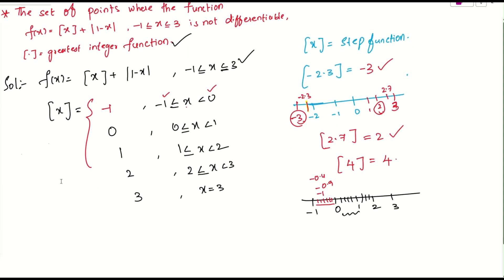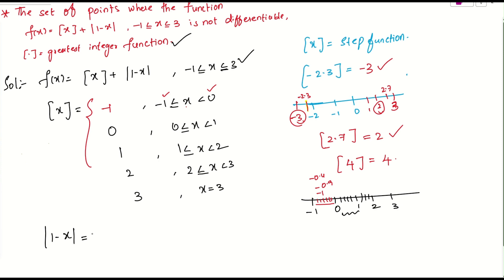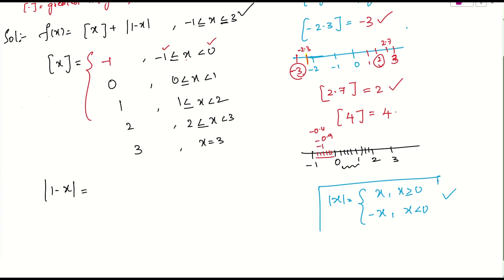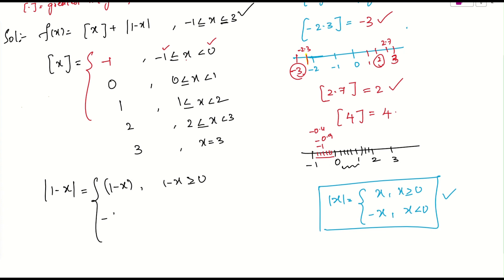Now let's handle mod(1 minus x). We know that mod(x) equals x if x ≥ 0, and equals minus x if x < 0. Applying this: mod(1 minus x) equals (1 minus x) if (1 minus x) ≥ 0, and equals minus(1 minus x) if (1 minus x) < 0.